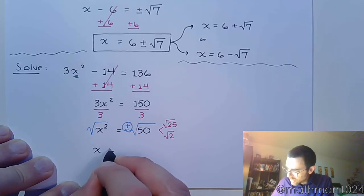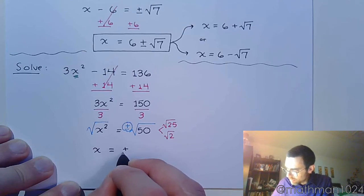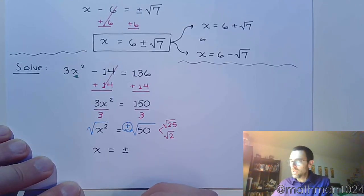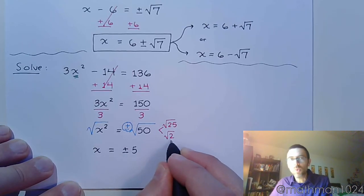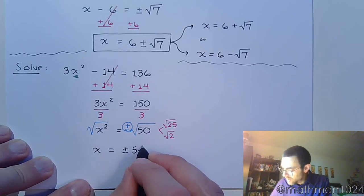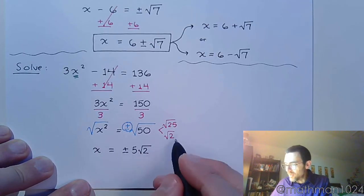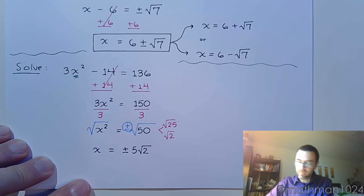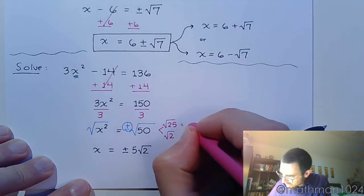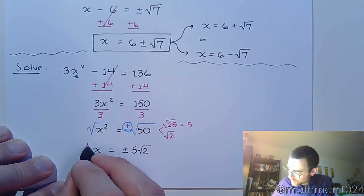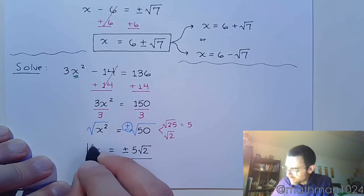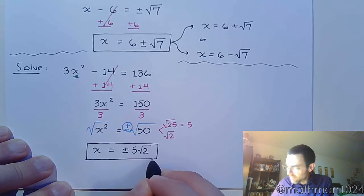So x = ± the square root of 25 times the square root of 2. The square root of 25 is 5, and the square root of 2 has to stay as √2 because 2 is not a perfect square and does not simplify. So x = ± 5√2.